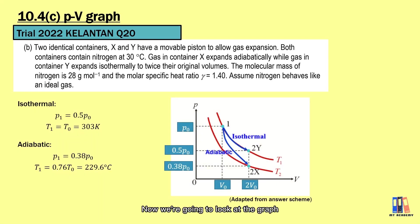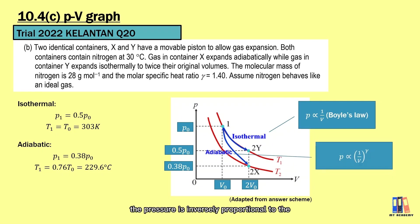Now we are going to look at the graph. You can see the pressure of both containers reduced when the gas expands. For adiabatic process, the pressure is inversely proportional to the volume to the power of gamma. Since gamma is more than 1, the PV graph for adiabatic is more curved compared to isothermal process.